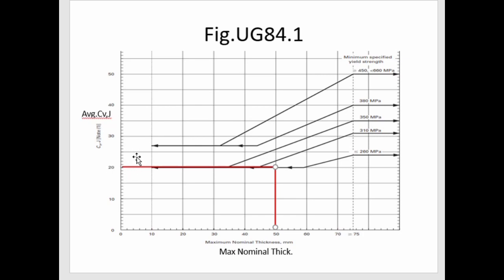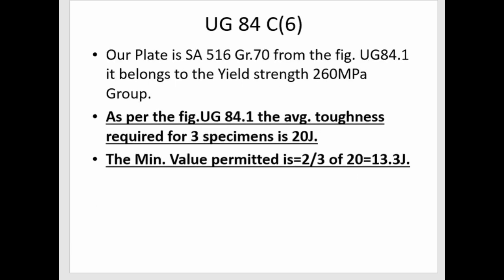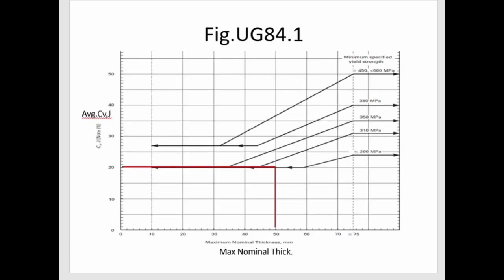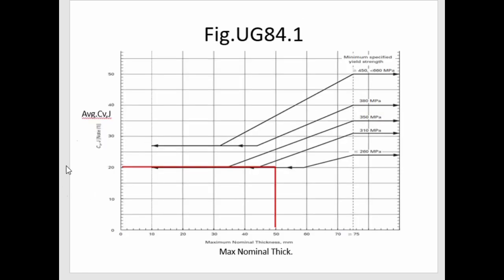From that intersection point, we draw a horizontal line to the y-axis to read the average toughness value. For our 50 mm thick SA516 Grade 70 material, we obtain an average toughness value of 20 joules.